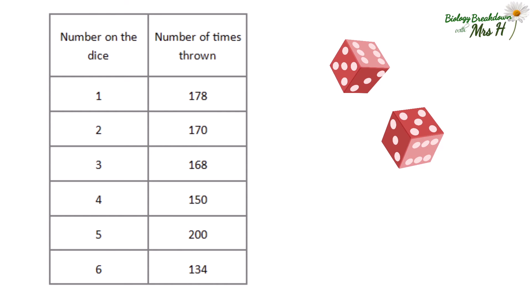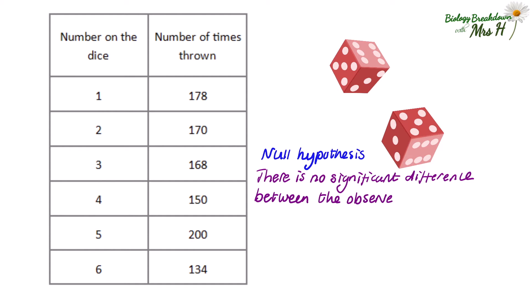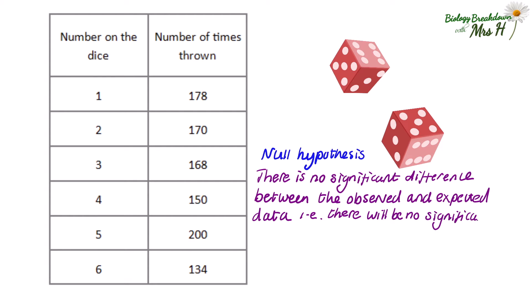We'll start with a simple example first. A student was investigating how many times each side of the dice was thrown out of a thousand throws. From this data they can test whether the observed results are similar to the expected results or if there is a significant difference. Before carrying out the statistical test a null hypothesis must be stated — a null hypothesis says there is no statistical significance between variables. So in this example the null hypothesis is: there is no significant difference between the observed and expected data; in other words there will be no significant difference between the number of times each number on the dice is thrown.